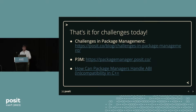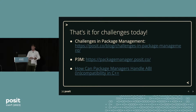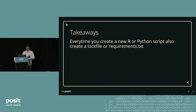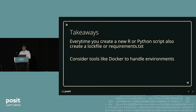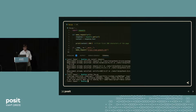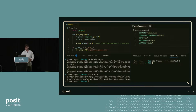That's all I wanted to do in terms of challenges today. If you want to dig deeper, I have a blog post called 'Challenges in Package Management.' I put the public package manager URL there. And if you really want to get into the nitty gritty, check out this talk called 'How can package managers handle ABI incompatibility in C++?' — that was pretty intense. In terms of takeaways: every time you create a new R or Python script, you should also create a lock file or requirements.txt. If you get used to this, you won't run into that thing where six months later you try to run code and nothing works. Consider looking at tools like Docker to handle environments and avoid those other problems. And if you're a package author, define your versions and system dependencies for others. Whenever you see a new script, ask yourself: where's my lock file?